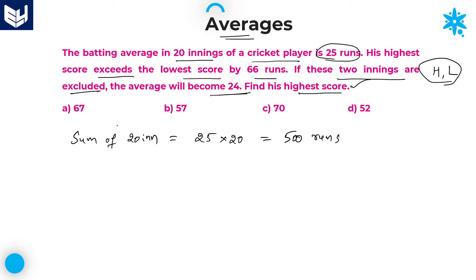The second sentence states that the highest score exceeds the lowest score by 66 runs. So the difference between highest score H and lowest score L: H minus L is equal to 66.